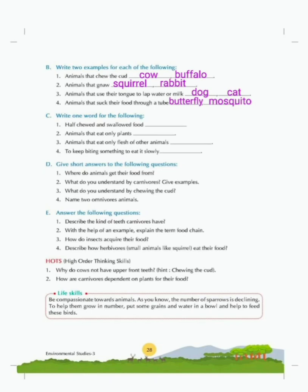Write one word for the following. First: half chewed and swallowed food — cud. Second: animals that eat only plants — herbivores. Third: animals that eat only flesh of other animals — carnivores. Fourth: to keep biting something, to eat it slowly — gnaw, which is done by rats and rabbits.